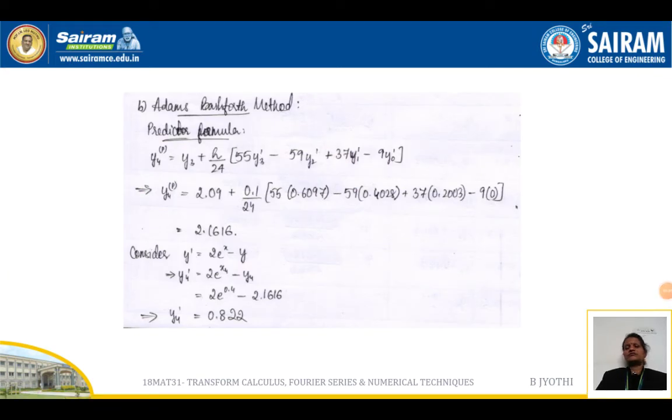Now Adams-Bashforth method. In Adams-Bashforth, the predictor formula is y₄(p) = y₃ + h/24[55y₃' - 59y₂' + 37y₁' - 9y₀'].